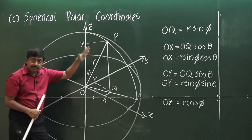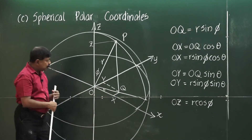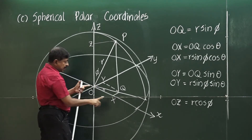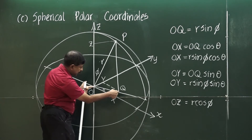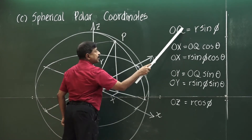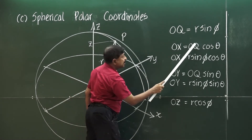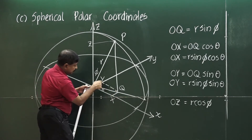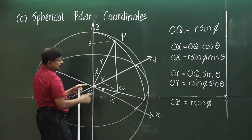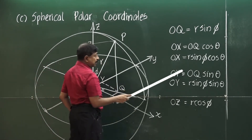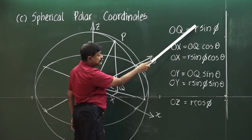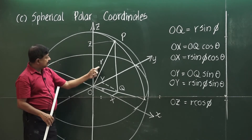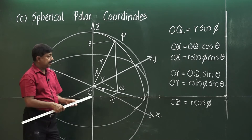Once you project OP onto the XY plane, the projection will be OQ. Then you project OQ onto the X axis and similarly onto the Y axis. Since this angle is theta, OX is OQ cos theta. Plugging in R sin phi for OQ, you get x = R sin phi cos theta. And OY is OQ sin theta, giving y = R sin phi sin theta. And z is simply R cos phi.